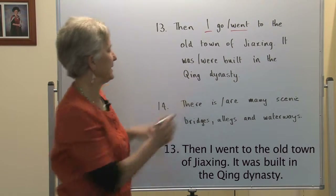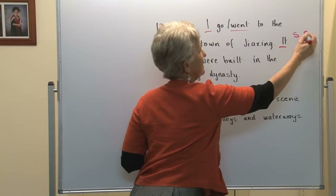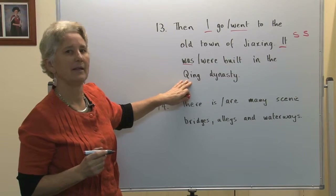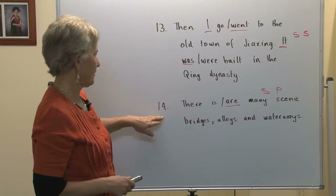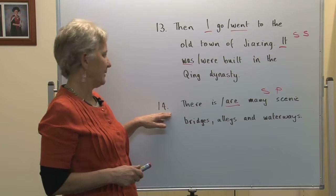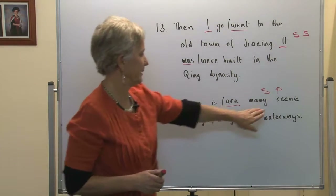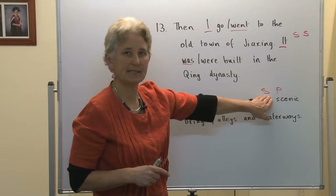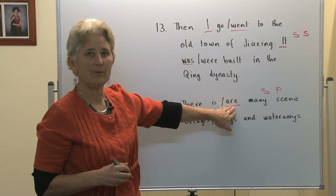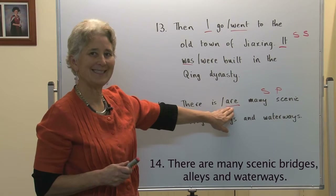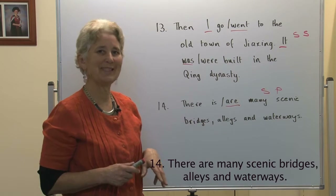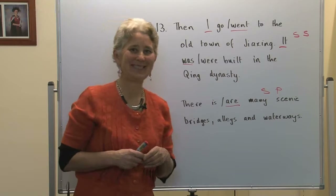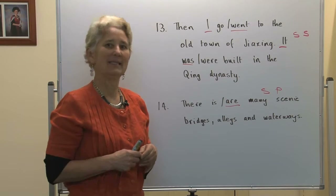It was built in the Qing Dynasty. 'It' is the singular subject of that sentence and must take the verb 'to be' in the past tense because it's something that has already happened. Number fourteen: there are many scenic bridges, alleys and waterways. Many scenic bridges, alleys and waterways is a compound subject — three nouns, that's plural — so it must agree with the plural verb. It's in the present tense because these beautiful bridges, alleyways and waterways are always there in the old town of Jiaxing. I hope you enjoyed this session of Living Grammar. Please join us again.